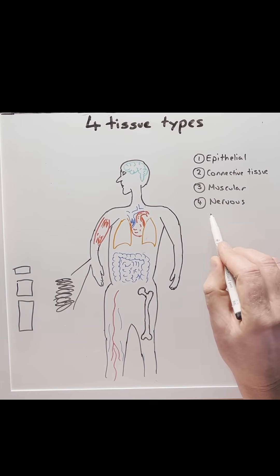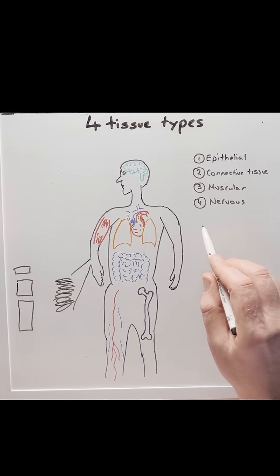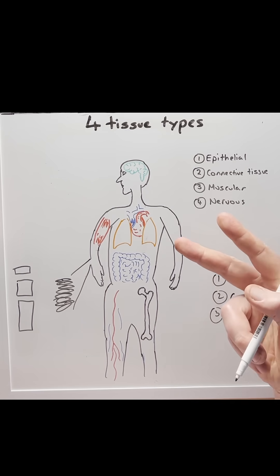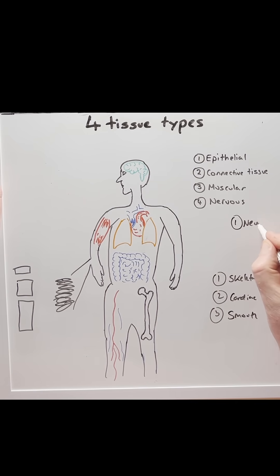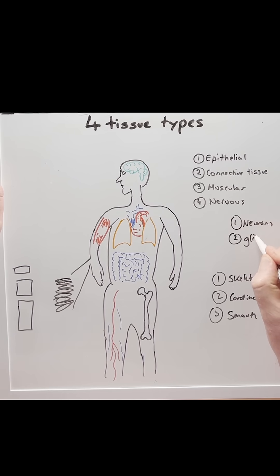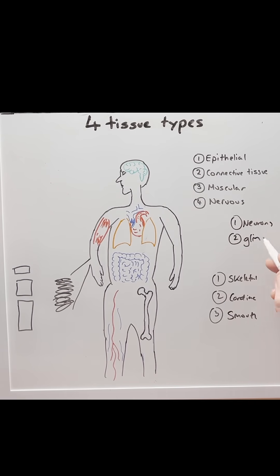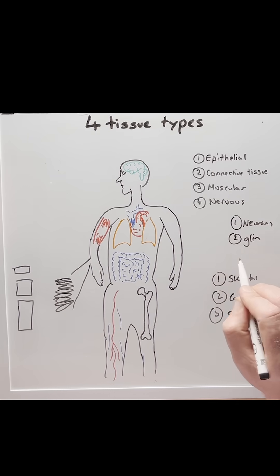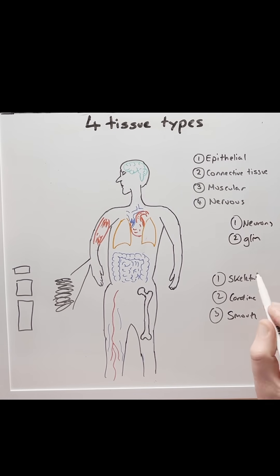Finally, we are left with the nervous tissue. The nervous tissue is made up of two types: number one, neurons, which are nerve cells, and number two, glia. Neurons receive stimuli, convert that into electrical activity, and then send electrical impulses to other neurons, or to muscles, or to glands, whilst glia help to support the neurons.